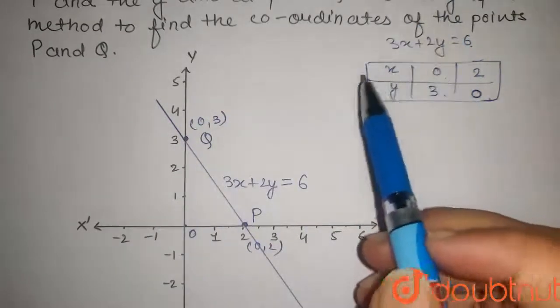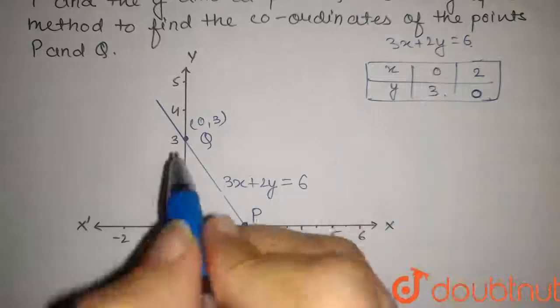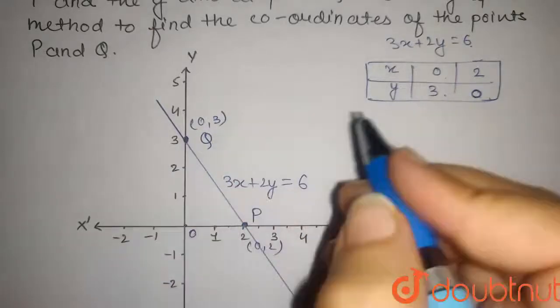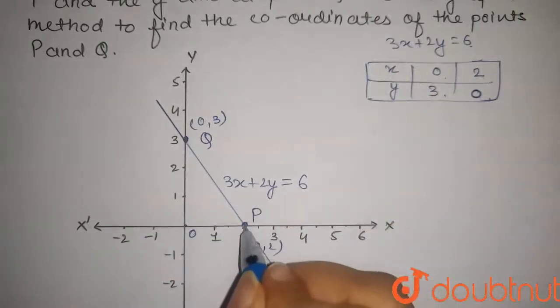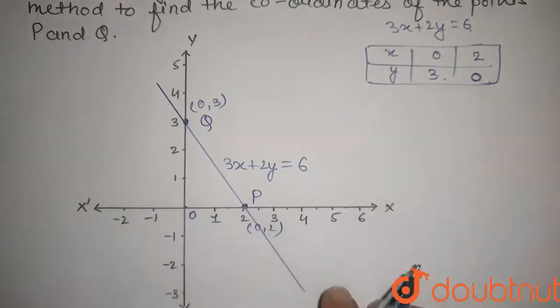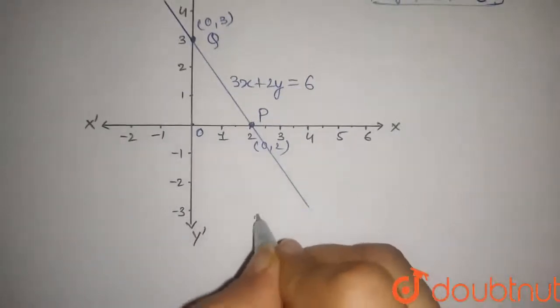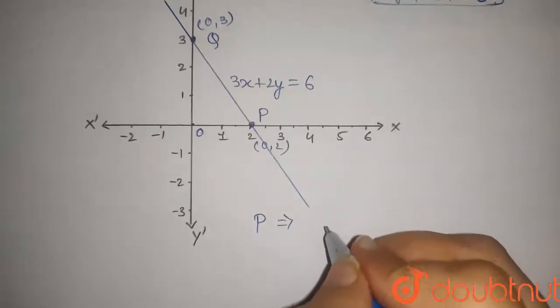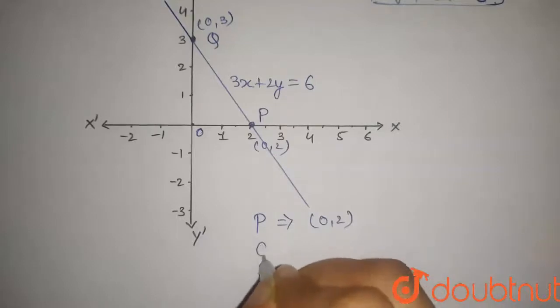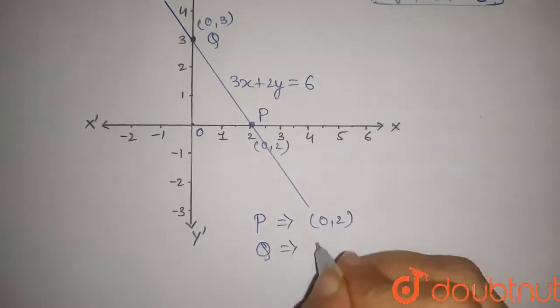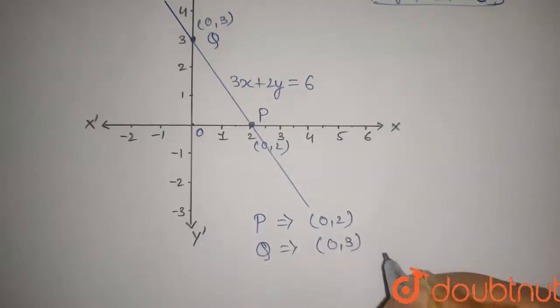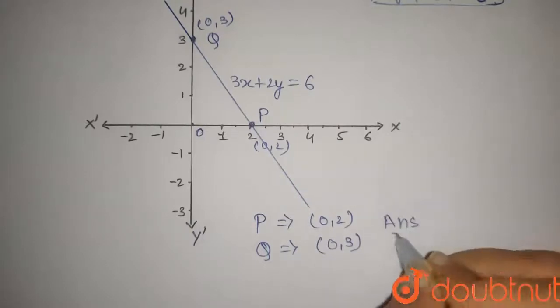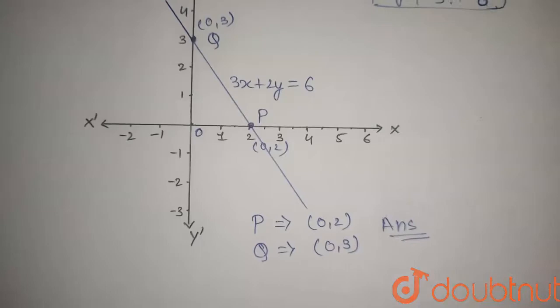Using the graphical method to find the coordinates: point P, where the line meets the x-axis, is (2, 0), and point Q, where it meets the y-axis, is (0, 3). This is the answer to the question. Thanks for watching.